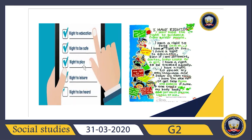So we have rights: the right to education, the right to be safe, the right to play, the right to leisure, the right to be heard. I have written all of these for you, so you can go through them and understand what we mean by having rights and what the different types of rights a child can have.